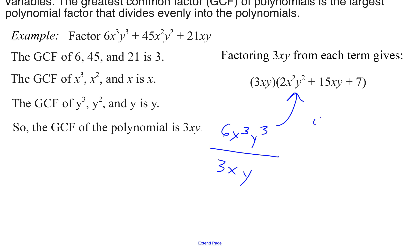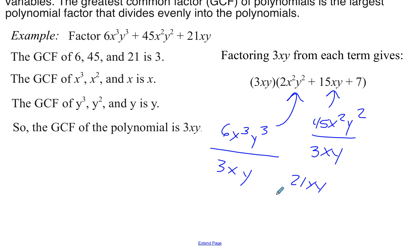Likewise, if we take the second term, 45x²y² divided by the greatest common factor of 3xy, we end up with 15xy. And lastly, 21xy divided by 3xy gives us just plus 7.